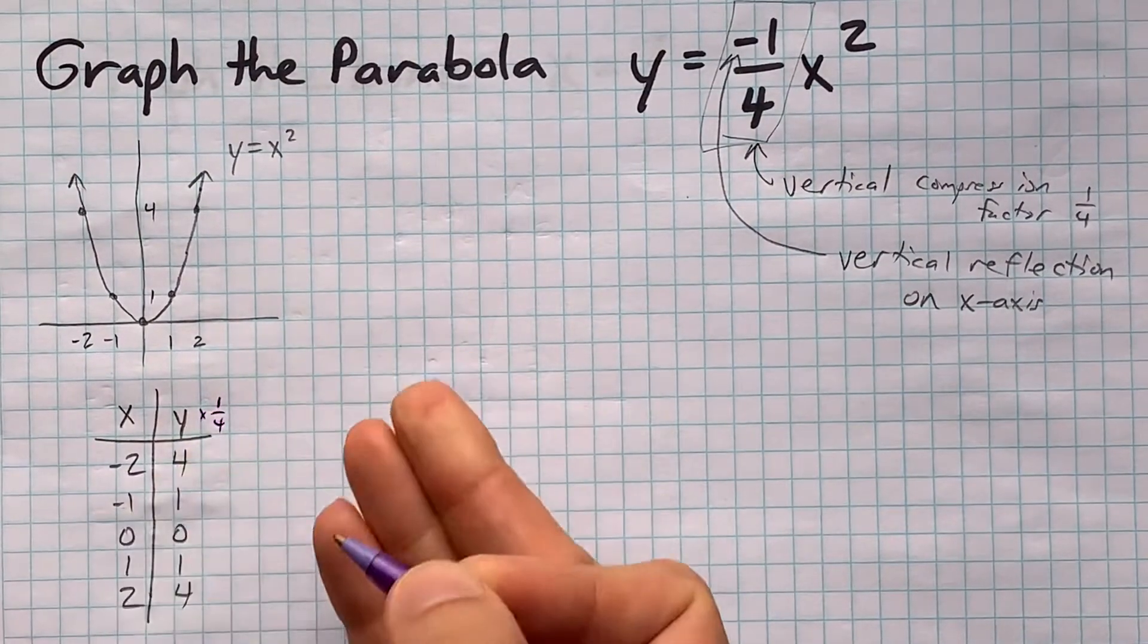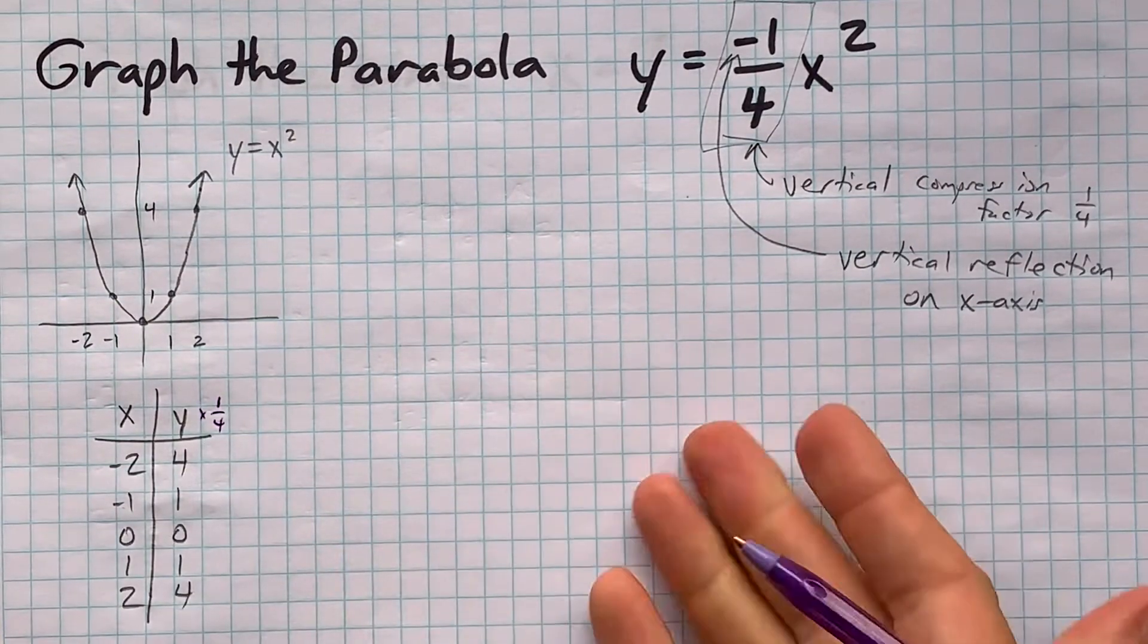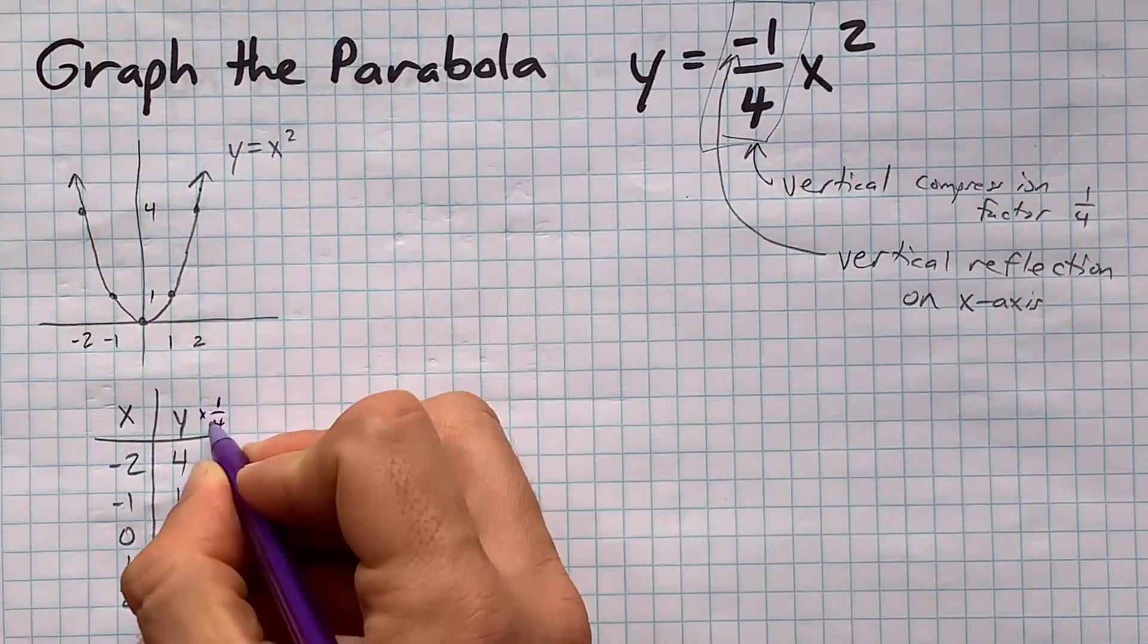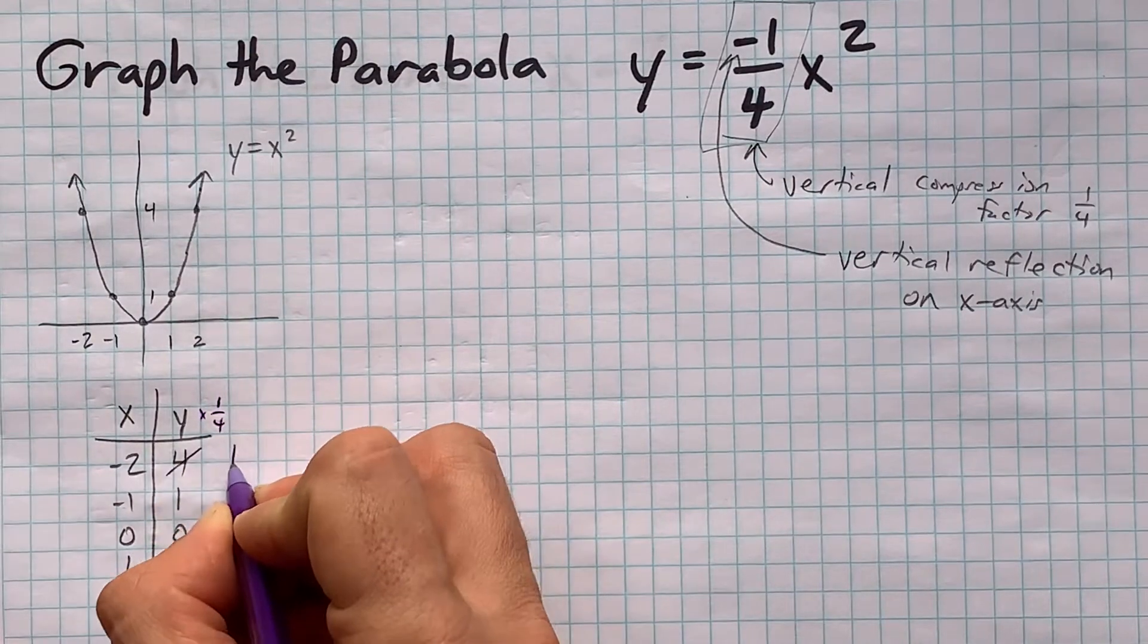Again, it's going to be a quarter as tall as it was, and y is the up-down direction. A quarter of 4 is just 1. A quarter of 1 is just a quarter.